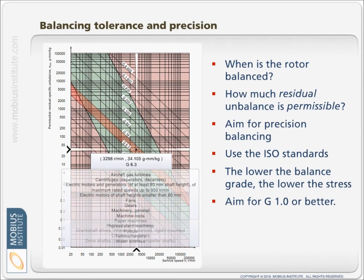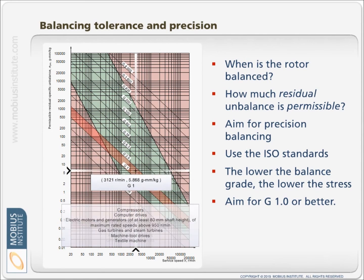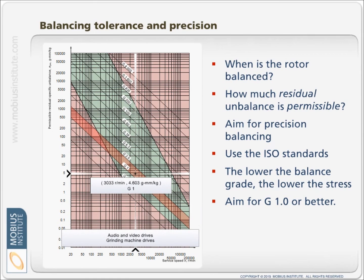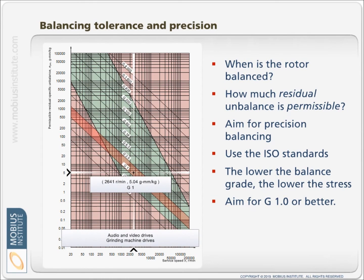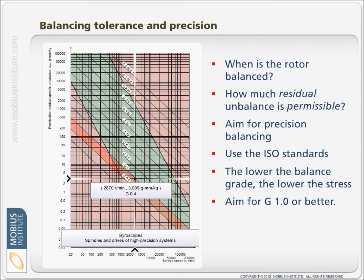So we need to go for a high level of precision which would be G1.0 or even lower. For high speed machines we need even better balance tolerance. The equivalent API standard is approximately G.7. In any case it's important to go through this process. And if anyone is doing balancing for you, make sure that they truly understand these standards and make sure you can precision balance the machine.